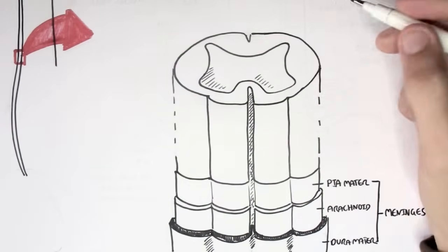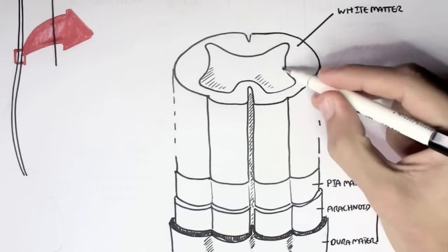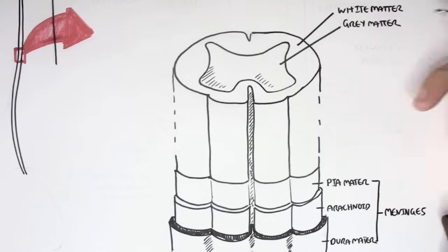If you have a cross section of the spinal cord, like on the top here, there is usually a butterfly shaped grey matter with the white matter around it. The white matter contains the axons of the nerve cells, while the grey matter contains the cell bodies of the nerve cells itself. Now the funny thing is, the brain actually has the white matter in the centre and then the grey matter around, so it's the opposite to the spinal cord.